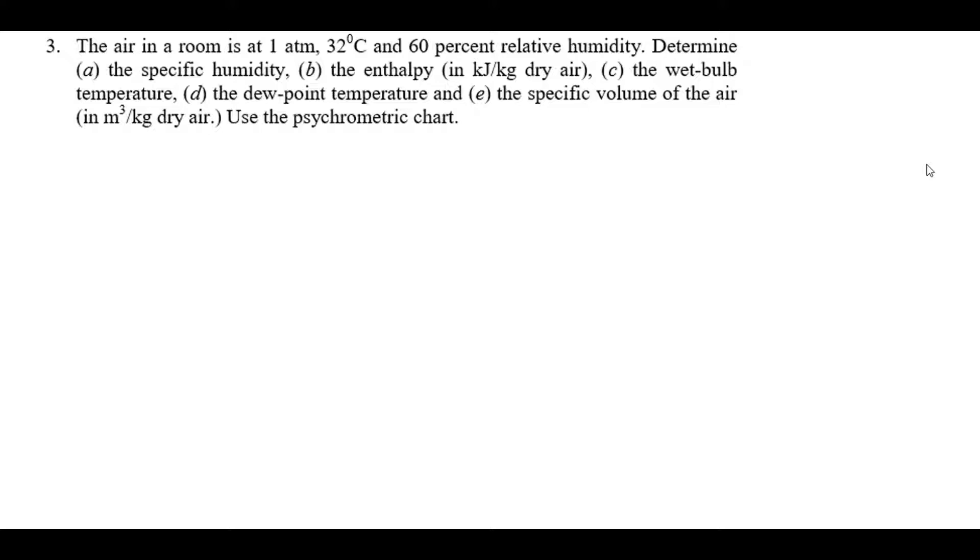Question three from example sheet one. This is also found on slide 14 of the notes. We're given atmospheric pressure. We're given a dry bulb temperature of 32 degrees and relative humidity of 60 percent.